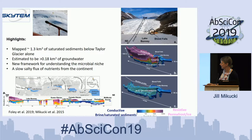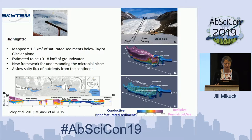This extensive network of saturated sediments is estimated to be about 0.18 km³ of groundwater based on conservative porosity estimates — that's more volume than all the surface lakes in the Taylor Valley combined. This allows us to think of this microbial niche now as a groundwater aquifer system, with implications for rock-water interaction time and nutrient flux estimates coming out of this system.